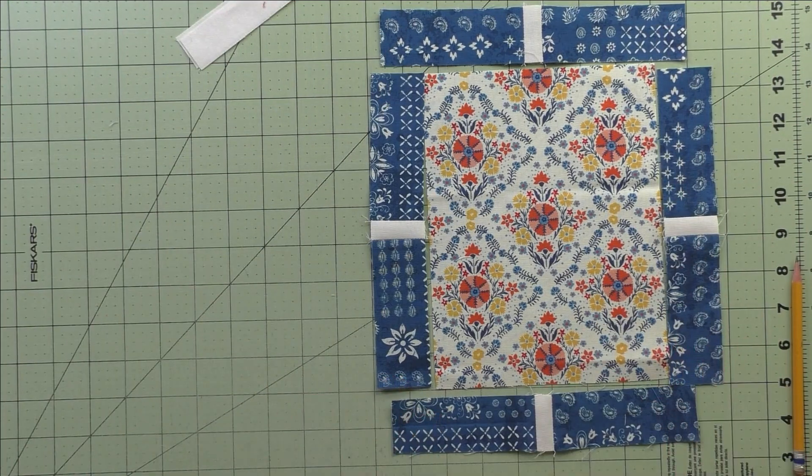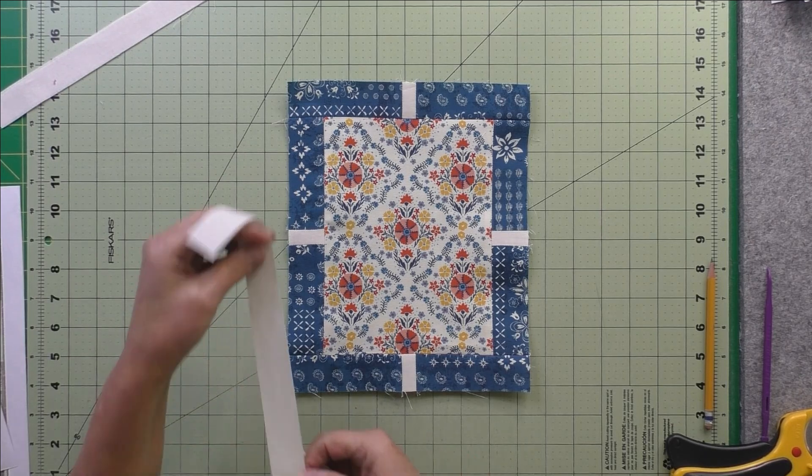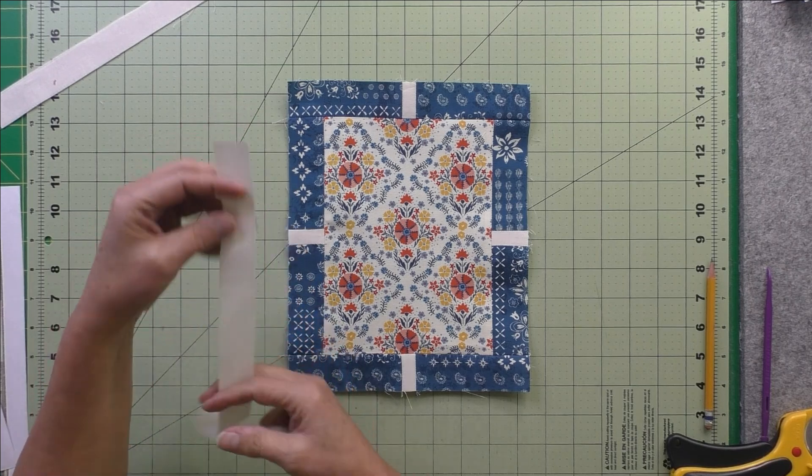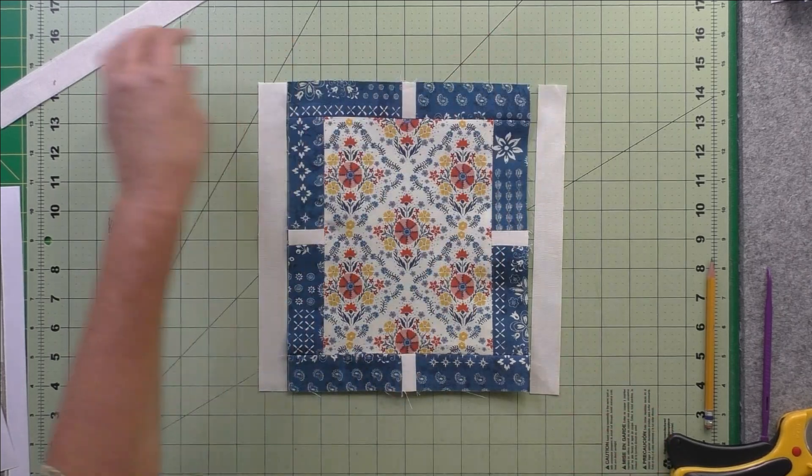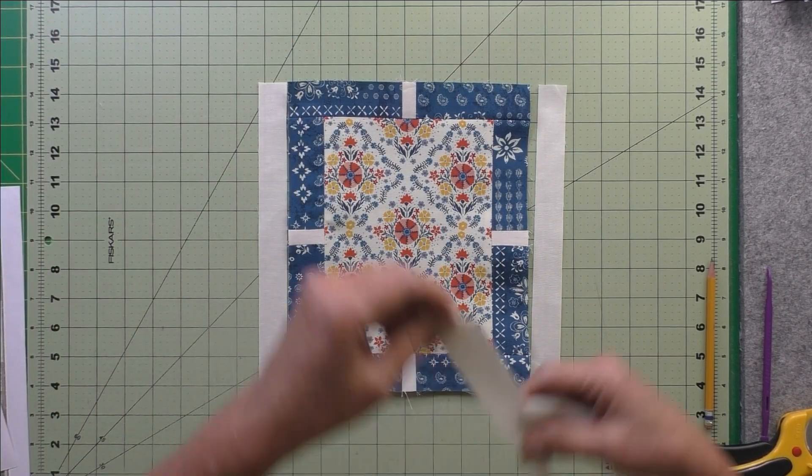The last thing we do, steps four and five: we're going to piece the B patch to the sides, press the seams open, and stitch the A patches to the top and bottom and press your seams open.